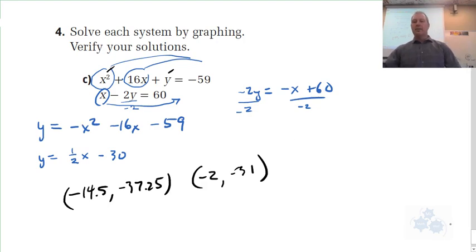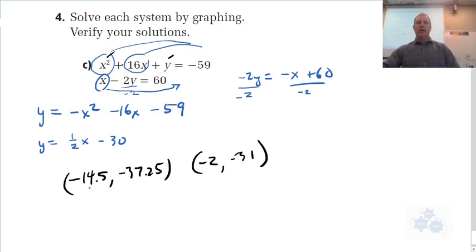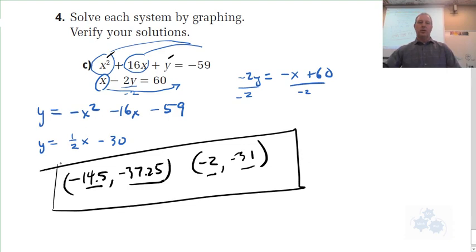Okay? So it looks like x should be equal to negative 14.5 and negative 2, and Y, negative 37.25 and negative 31. So these are the, looks like those are the solutions that you're looking for in 4C. So does that help? Does that help there? Okay.